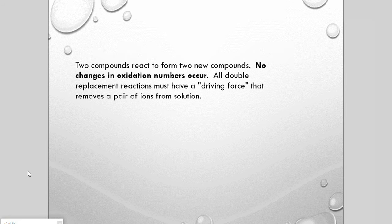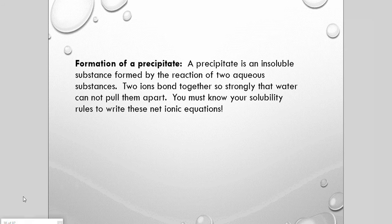Double replacement reactions — also called precipitation or neutralization reactions — don't usually involve a change in oxidation numbers. In a double replacement reaction we must consider what force is driving the change in the aqueous ion system. Precipitate formation is when an insoluble substance forms from a reaction between two aqueous substances. Two ions bond so strongly that water molecules cannot pull them apart, resulting in crystal formation. These insoluble substances are precipitates, so we need a good understanding of solubility rules.